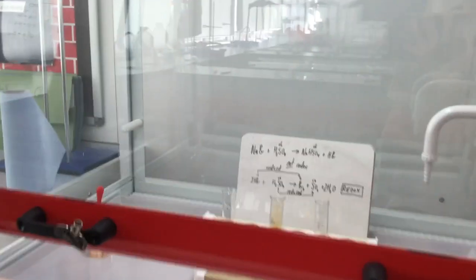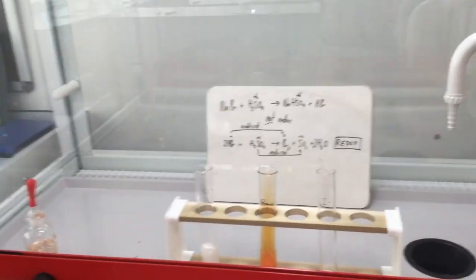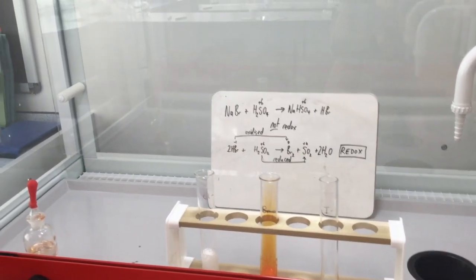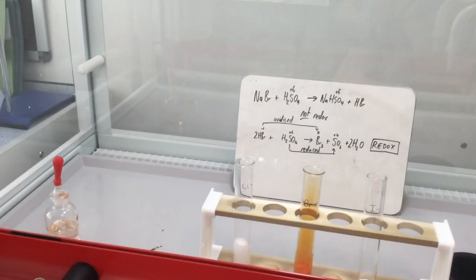You can see white misty fumes coming out of the top. You can also see the orange colour, the very distinctive colour of bromine. And we also have some colourless sulfur dioxide gas being formed as well.